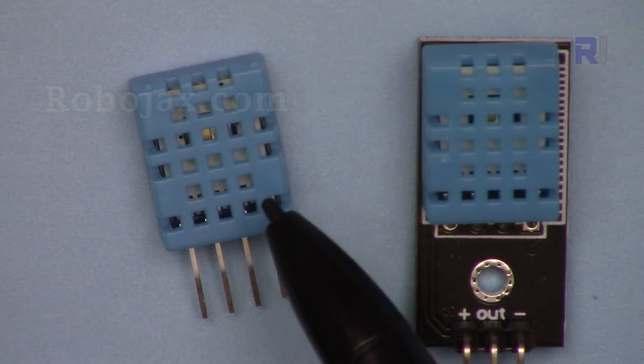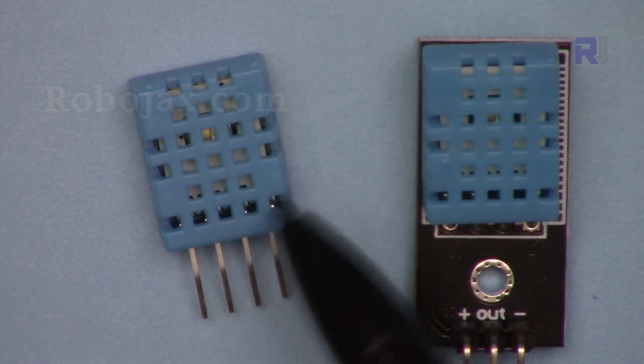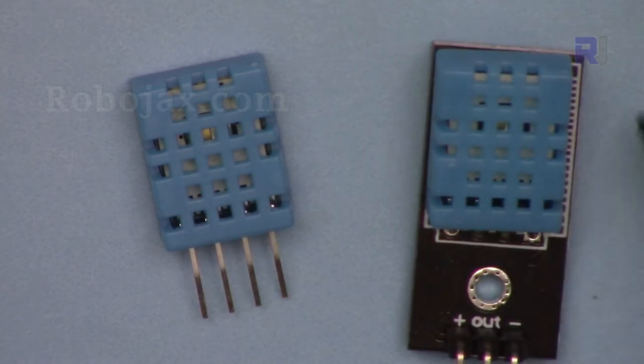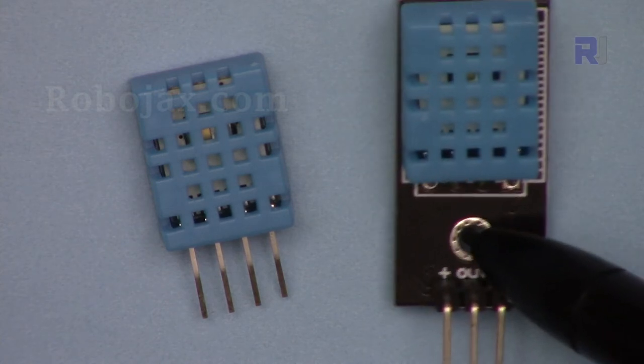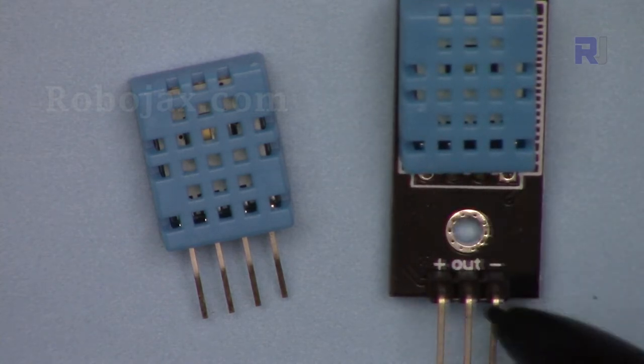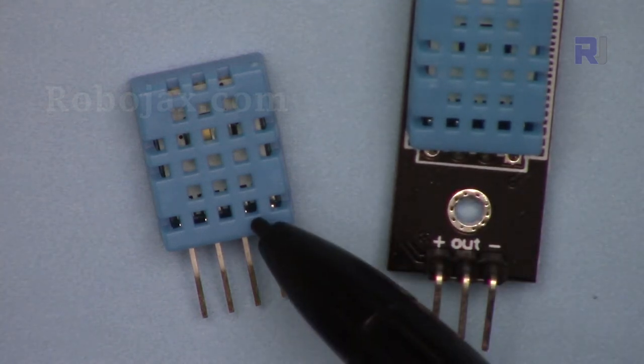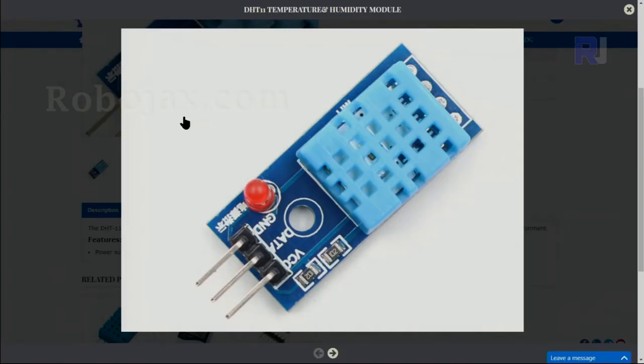This is the DHT11 as it is sold with four pins and this is the module that is made for Arduino with a little PCB here. This has three pins and this has four pins. The module is also sold this way with two resistors on this side and one LED.